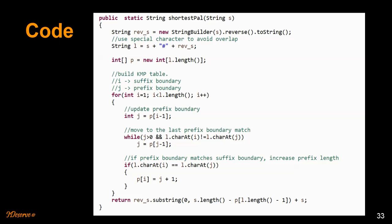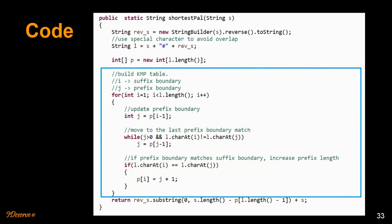Let's look at the code. Given a string S, we reverse it and append it to the original string with a special character in between to avoid overlap. Then we construct the partial match table using the KMP algorithm. Once we have the partial match table, we use the last column value to trim the reverse string — removing the longest prefix of the original string that matches the suffix of the reversed string — and append the remaining characters to the start of the original string. I'll explain the partial match table creation and the full KMP algorithm in another video.